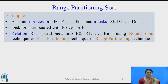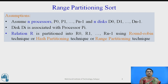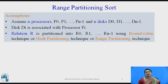Before starting with the steps of the range partitioning sort and how it applies parallelism, let us see some assumptions. We will assume there are n processors P0, P1 till Pn minus 1, and there are disks D0, D1, Dn minus 1. Every disk is associated with one processor, and that processor works on the contents of those disks. The relation R is partitioned as R0, R1 till Rn minus 1, giving n partitions. The partitioning technique already applied might be round robin, hash partitioning, range partitioning, or any other technique.